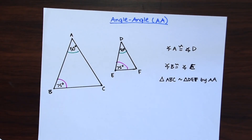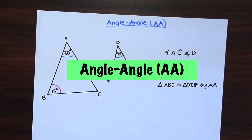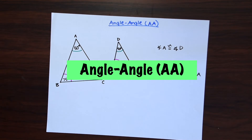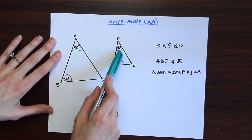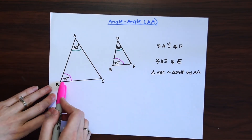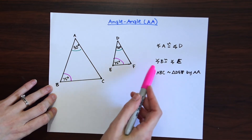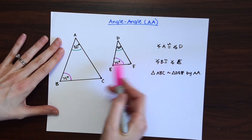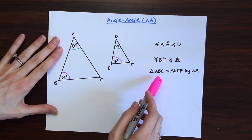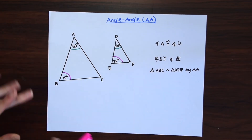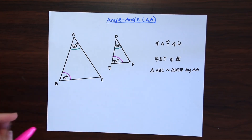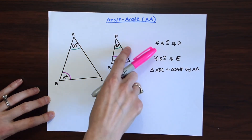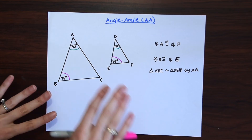There are three different ways to prove that two triangles are similar to each other. For angle-angle similarity: angle A is congruent to angle D, which is 50 degrees. Angle B is 75 degrees and angle E is also 75 degrees, so these angles are congruent, meaning these triangles are similar. Note that these two triangles are clearly different in size — if they were the same size with the same angles they'd be congruent — but because triangle ABC is so much bigger than triangle DEF, we know they are similar.